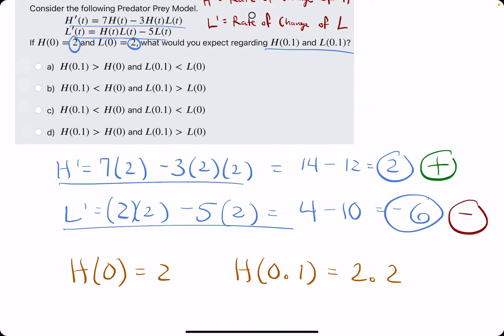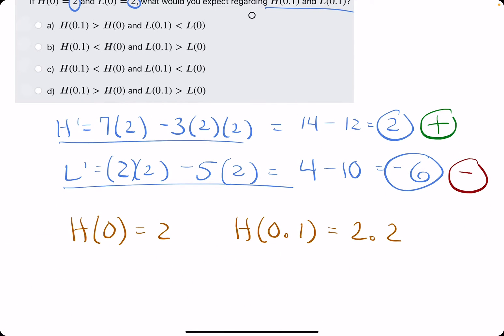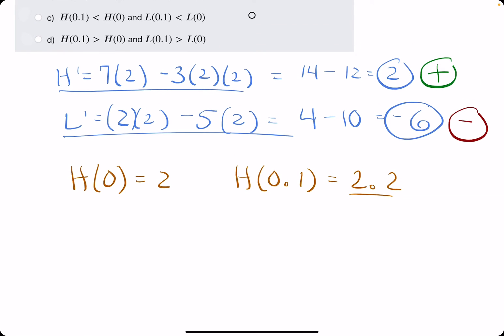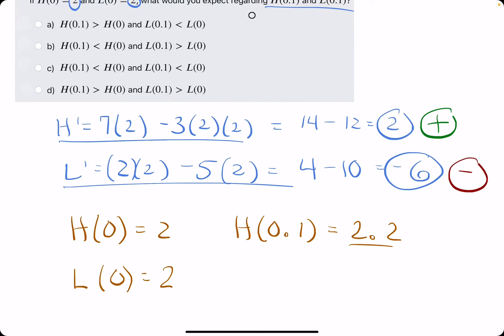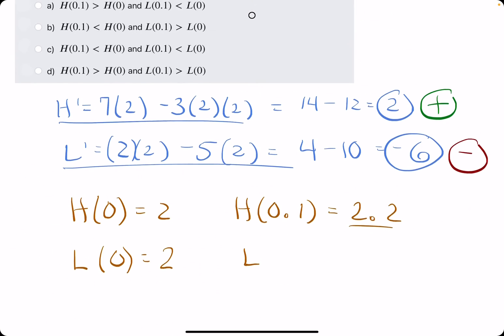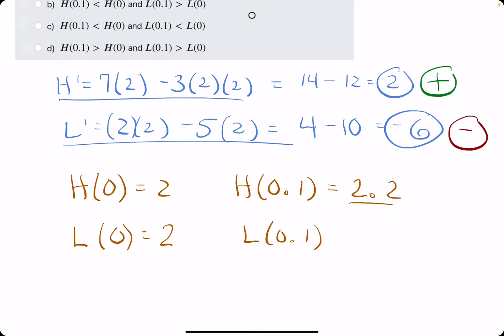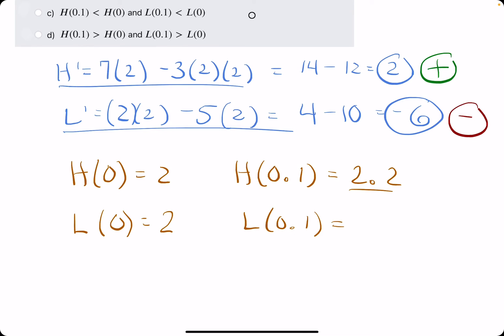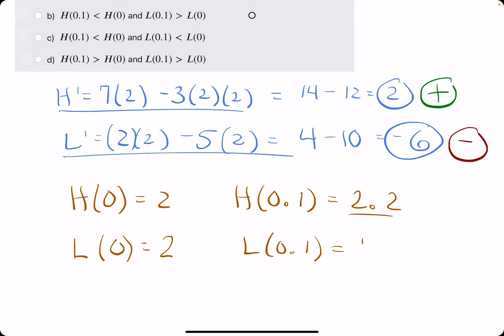It isn't necessarily going to be that, but we know it's going to be a higher number than 2. I'll just save this as a random case that it could be. L(0) is equal to 2 as well. However, l prime was negative 6, which means the rate of change is negative. Which means L(0) is 2, but L(0.1) should be less than 2 because it had a negative rate of change. Making up a value, 1.8.